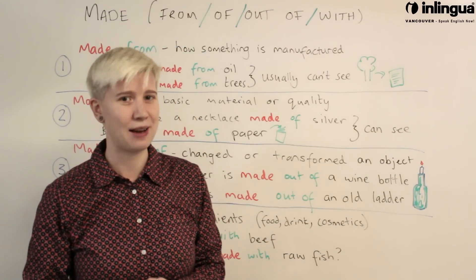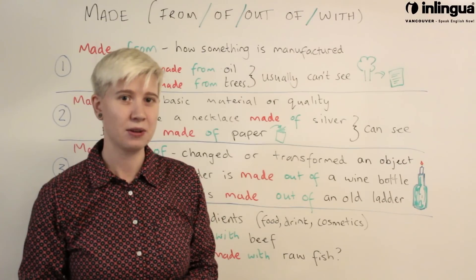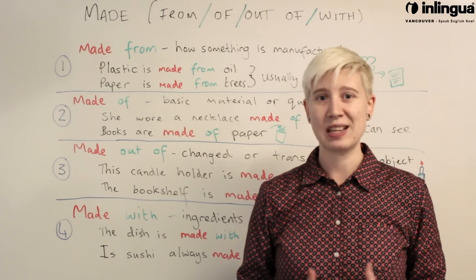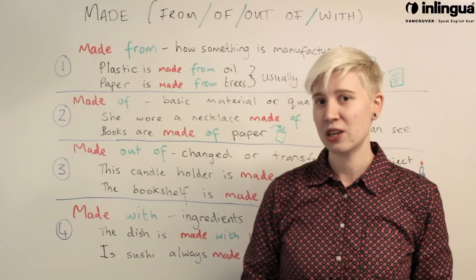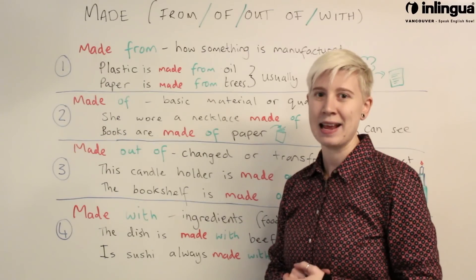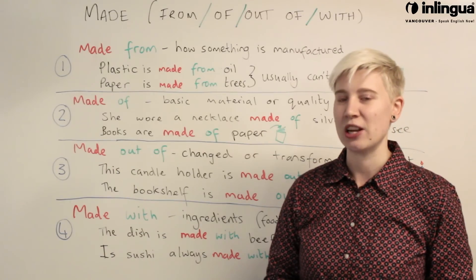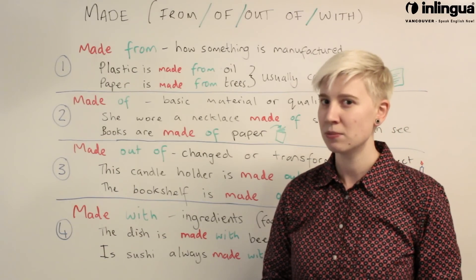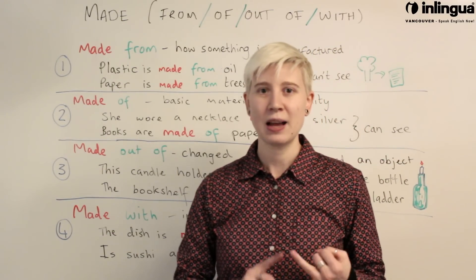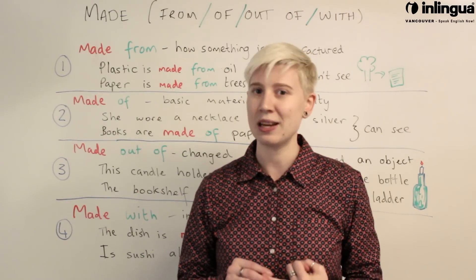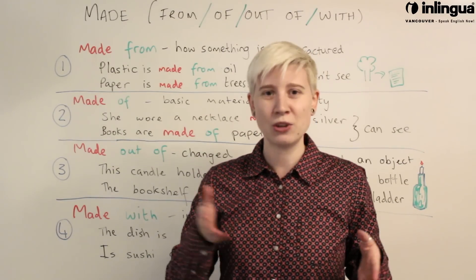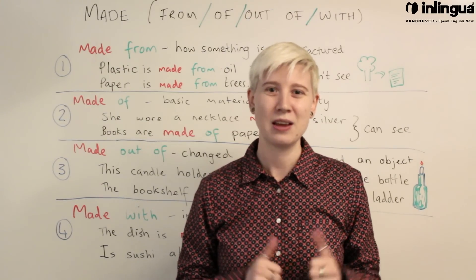One more, and this one's the easiest so I left it till last: 'made with'. When we say something is 'made with' something else, we're usually talking about ingredients — for example, with food. 'This dish is made with beef' — beef is one of the ingredients in the dish. 'Is sushi always made with raw fish, or can it be made with something else?' You can use 'made with' for food and cosmetics like body lotion or shower gel. You'll see it in drug stores on advertisements: 'This lotion is made with the finest materials' — they want you to buy because of that special ingredient.